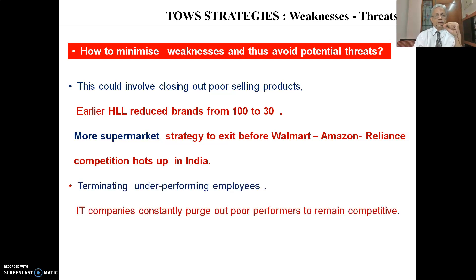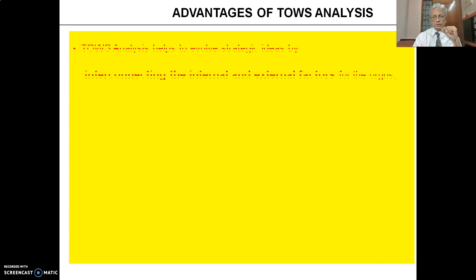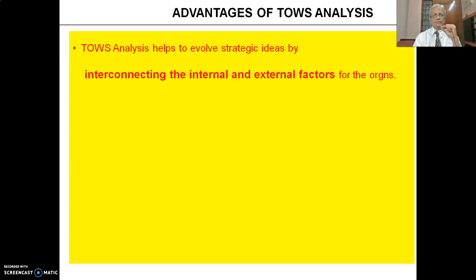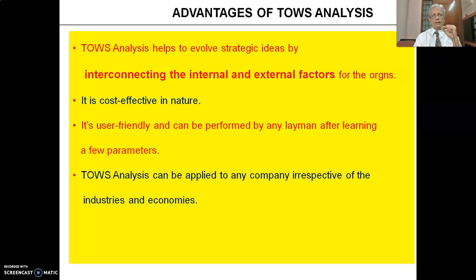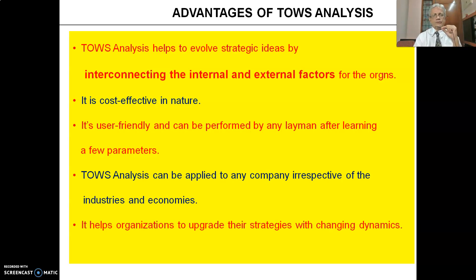Terminating underperforming employees is also a strategy under this category. IT companies constantly pursue purging poor performers to remain competitive. As for the advantages of the TOWS strategy — it basically helps to evolve strategic ideas by interconnecting both internal and external factors. It is very cost-effective and user-friendly, can be performed by anyone after learning a few parameters, and can be applied to any company irrespective of industry or economy. It also helps organizations to upgrade their strategies with changing dynamics, so as and when the environment changes, you can also upgrade the strategy.